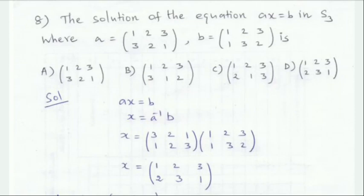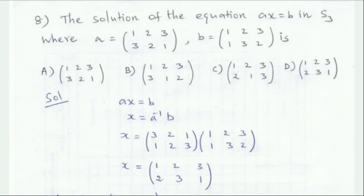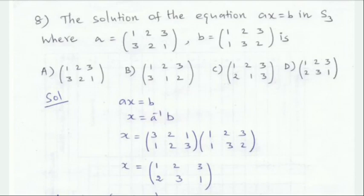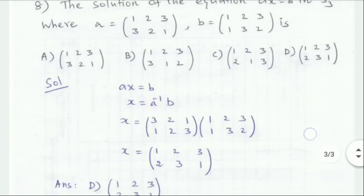Finding A inverse: A is (1 2 3 / 3 2 1). Computing the multiplication: 1 maps to 1, then to 3; 2 maps to 3, then 1 maps to 2; 2 maps to 3. The answer gives x = 3, then 3 maps to 1, and 1 maps to 1.